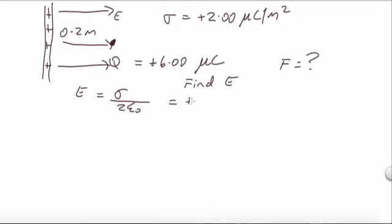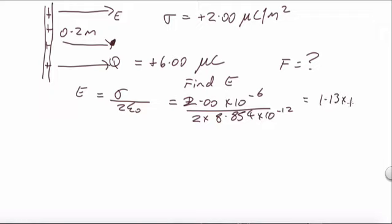So the value of it, it'll be 2 by 10 to the minus 6 over 2 times 8.854 by 10 to the minus 12, and that will give us about 1.13 by 10 to the 5 newtons per coulomb.